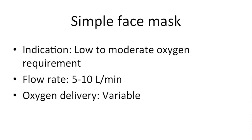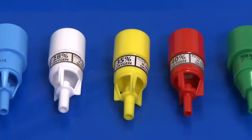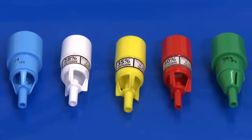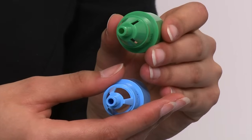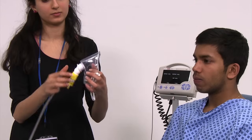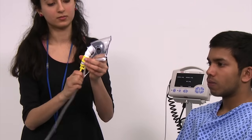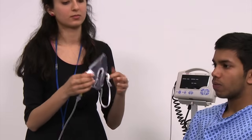If a specific concentration of oxygen is to be delivered, or the patient continues to deteriorate, a Venturi mask can be used. These have special adapters which vary the diameter of flow in order to achieve a specific FiO2, ranging from 24 to 60%. The adapters are different colours and display the required flow rate as well as the estimated FiO2. The oxygen is connected up in a similar way to the simple face mask, and the mask is then adjusted to fit on the patient's face.